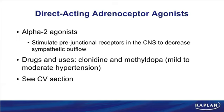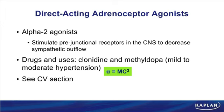Next, alpha-2 agonists — briefly reviewed here, as they're covered in detail in the cardiovascular session. The two drugs are clonidine and methyldopa, which can be used in hypertension. A mnemonic: modify Einstein's equation to 'alpha equals MC squared' — alpha-2, M for methyldopa, C for clonidine.